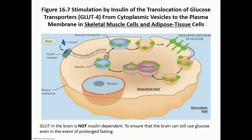For skeletal muscles and adipose tissue to use glucose, it is totally dependent on the presence of insulin. The brain is different — the glucose transporter, GLUT, does not depend on insulin. Brain cells have these transporters on the surface all the time because they are in constant need of glucose. The brain is able to intake and utilize glucose in the absence of insulin. The insulin-dependent transporter in skeletal muscles and adipose tissue is known as GLUT4.